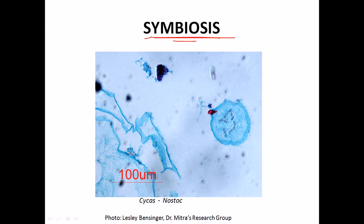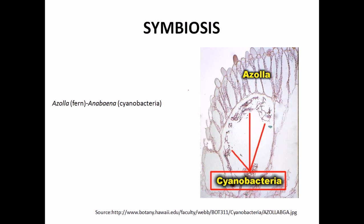Another positive side of cyanobacteria is their symbiotic effects. The cyanobacterium Nostoc interacts with Cycas — a type of tree — living inside its roots, fixing nitrogen for the tree while taking nutrients and water from it. A similar symbiosis occurs with Azolla, where Anabaena lives inside Azolla's vacuoles, taking nutrients and water and in return providing nitrogenous compounds.